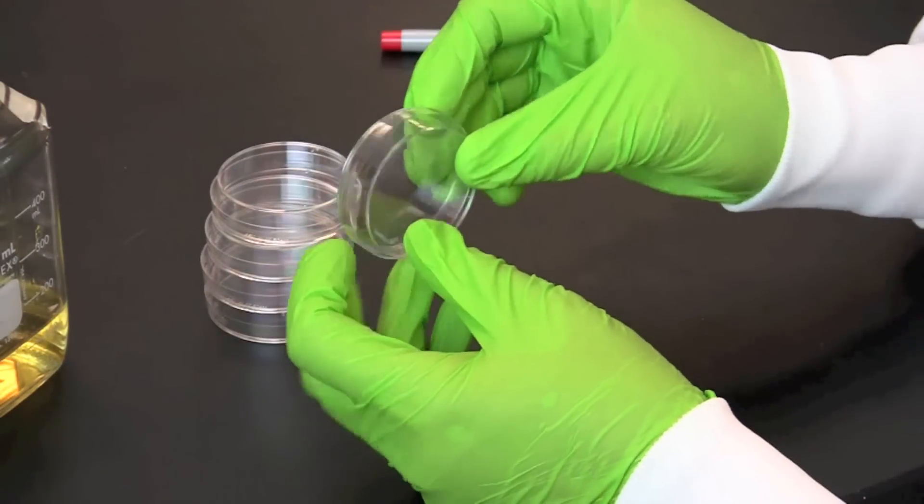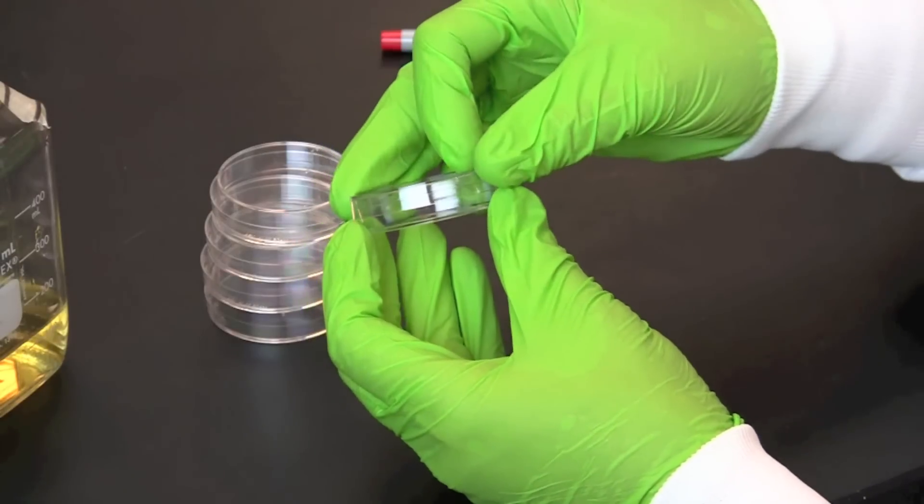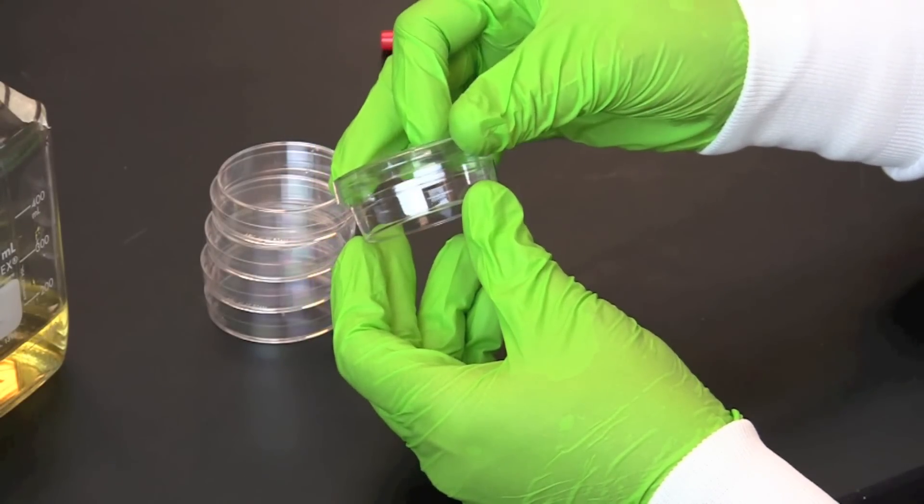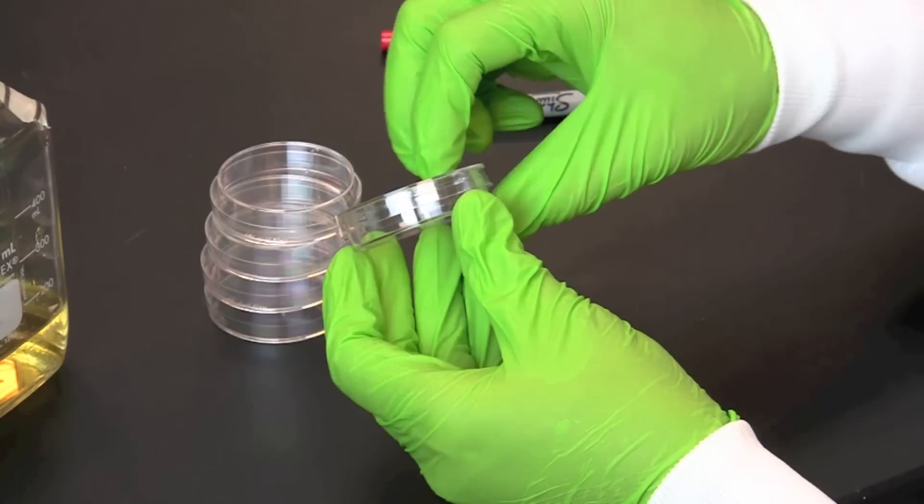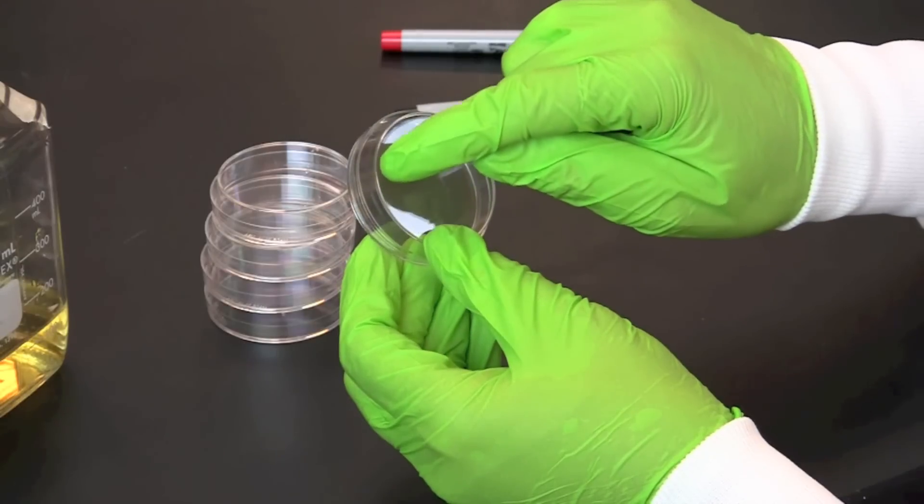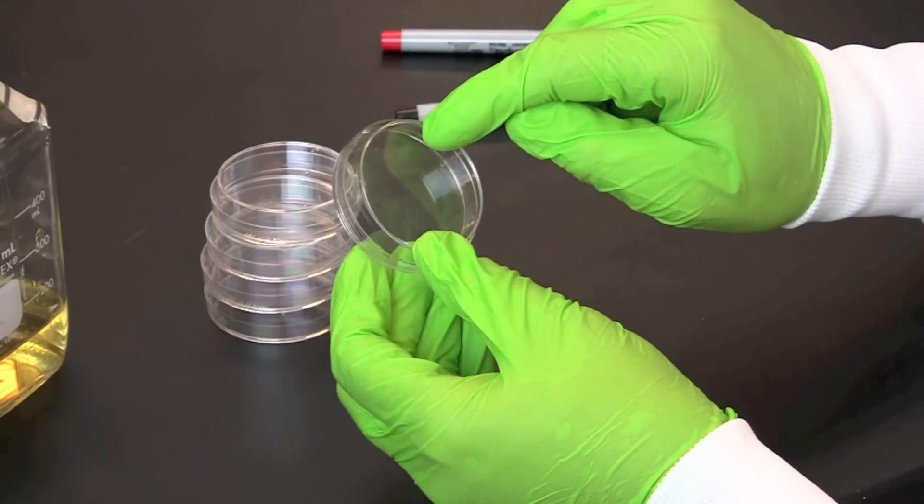We will be pouring our media into petri dishes. Petri dishes have a base and a lid. The lid has a slightly larger diameter and fits over the base. Labeling the plates is done in an arch along the outer edge of the base.